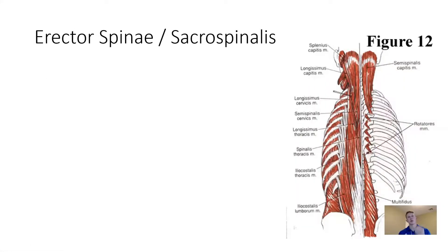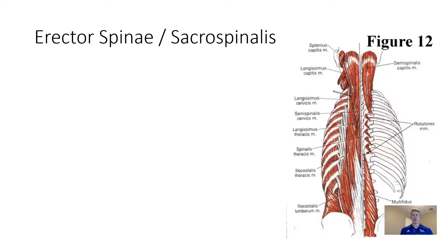Continuing with the posterior aspect of the vertebral column or axial segments — after quadratus lumborum, which stops us from moving laterally at the lumbar spine — there are quite a few more muscles. We're going to put them together and create what we call erector spinae as our large posterior vertebral column muscle group. These are our vertebral extensors; we call them erector spinae because they help keep the spine erect. Their job is to resist flexion or cause extension — if you relax erector spinae, you fall into trunk flexion.